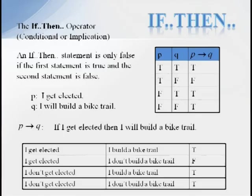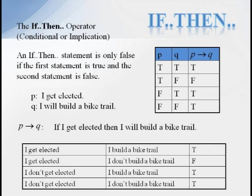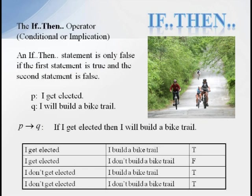The final logical operation I wish to discuss is the IF-THEN connective. If P THEN Q is also often stated as P implies Q. This operation is not quite as intuitive as the others. However, it is very important. Suppose a politician made the statement, if I get elected, then I will build a bike trail. What conditions would need to exist to say the statement is true or false?